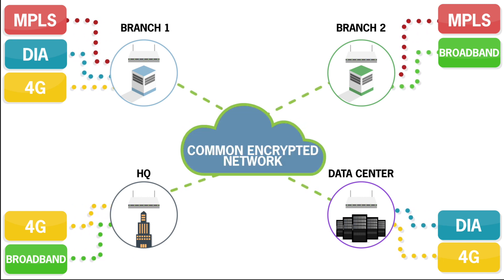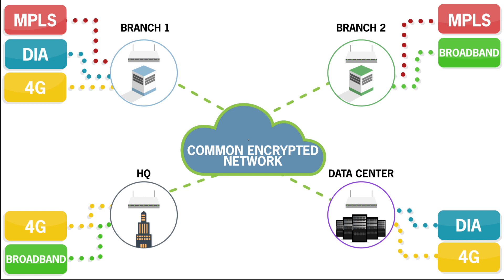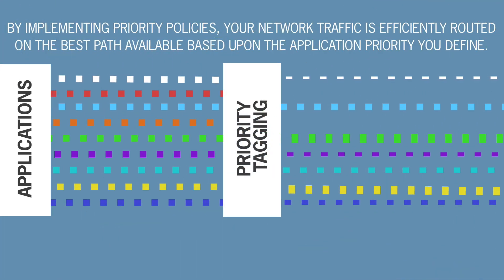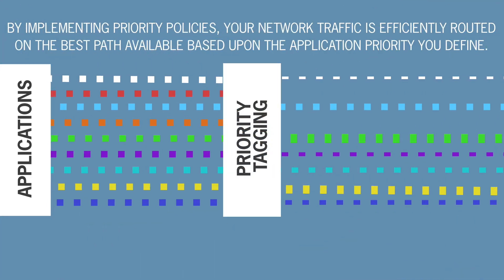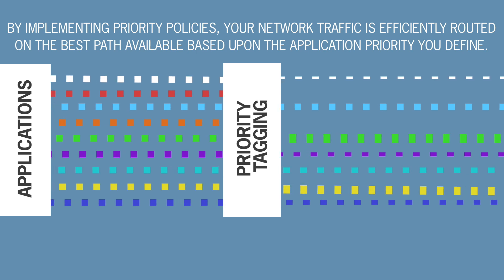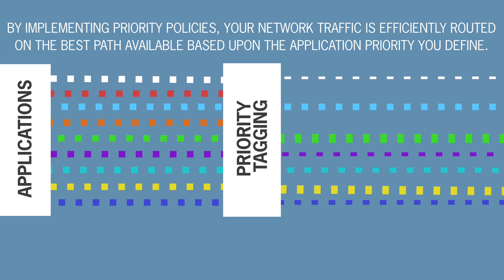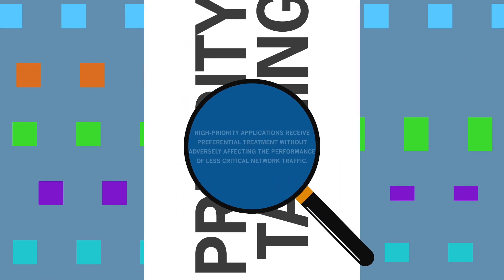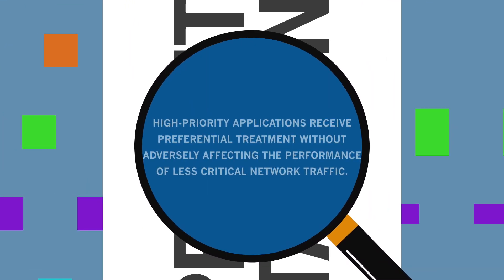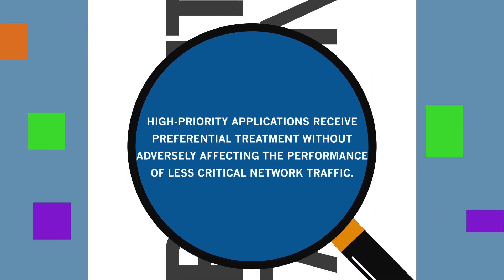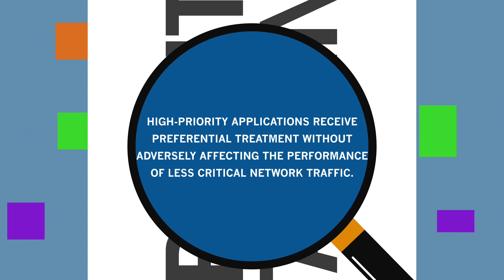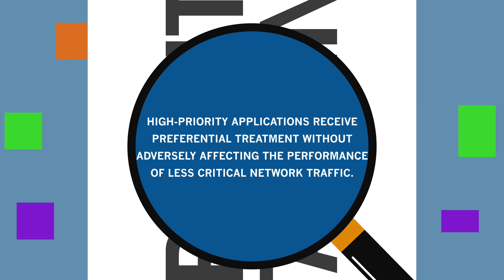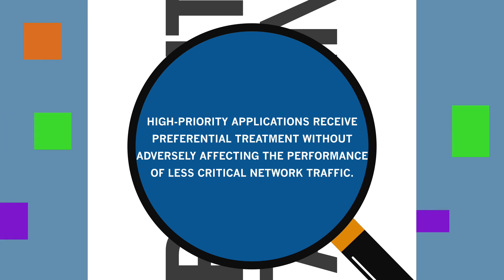Rules and policies are created with SD-WAN that can be used to automatically distribute and implement routing changes and system upgrades across your whole organization. By implementing priority policies, your network traffic is essentially routed on the best path available based upon the application priority you define.